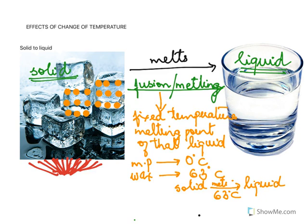What really happens during fusion? During fusion we require heat. Here we have molecules of water, and because it is a solid, these molecules are not free to move. There is a very strong force of attraction between these molecules, so the molecules remain in their position and in their place.